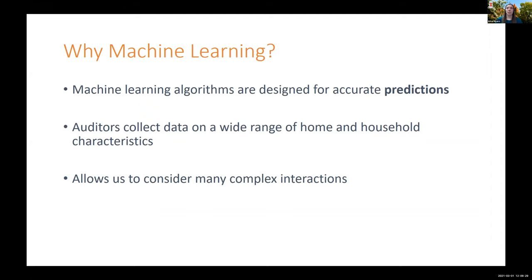Why are we interested in using machine learning? Machine learning algorithms are designed for accurate predictions — used all the time in the private sector to predict what you want to buy on Amazon or watch next on Netflix. We want to see if we can predict which homes are on the far right tail and will get a lot of savings. We have a unique situation because auditors collect data on such a wide range of home and household characteristics, which is ideal for machine learning and allows us to consider many complex interactions between all these observed aspects.